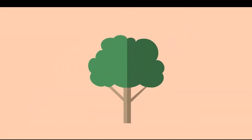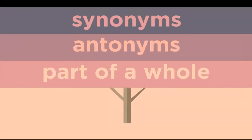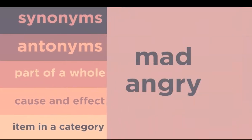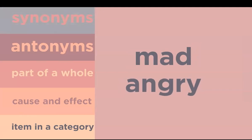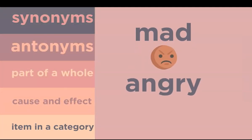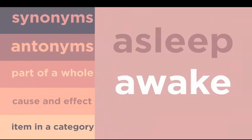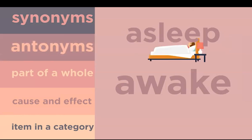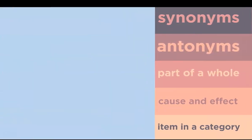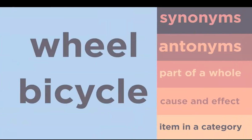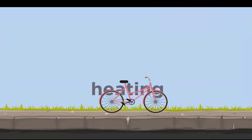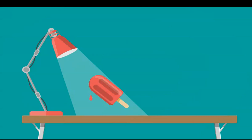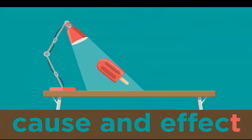Some types of word relationships include synonyms, antonyms, part of a whole, cause and effect, and item in a category. Mad and angry are synonyms because they have similar meanings. Asleep and awake are antonyms because asleep is the opposite of awake. A wheel and a bicycle have a part-of-whole relationship because a wheel is part of a bicycle. Heating and melting show cause and effect — heating an ice pop will cause it to melt, so heating is the cause and melting is the effect.